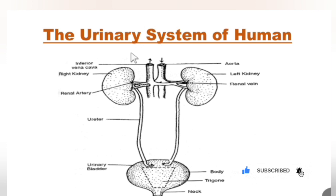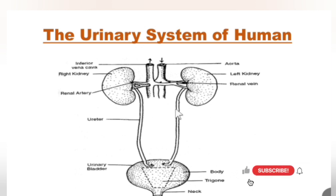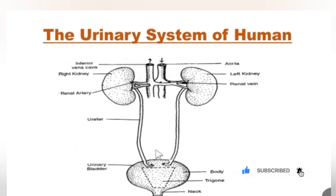There are three main organs forming the urinary system in humans. First are the kidneys — we have a pair of kidneys. Then we have a pair of tubular structures called the ureters. And then we have the bag-like structure known as the urinary bladder. These three main organs make up our urinary system.